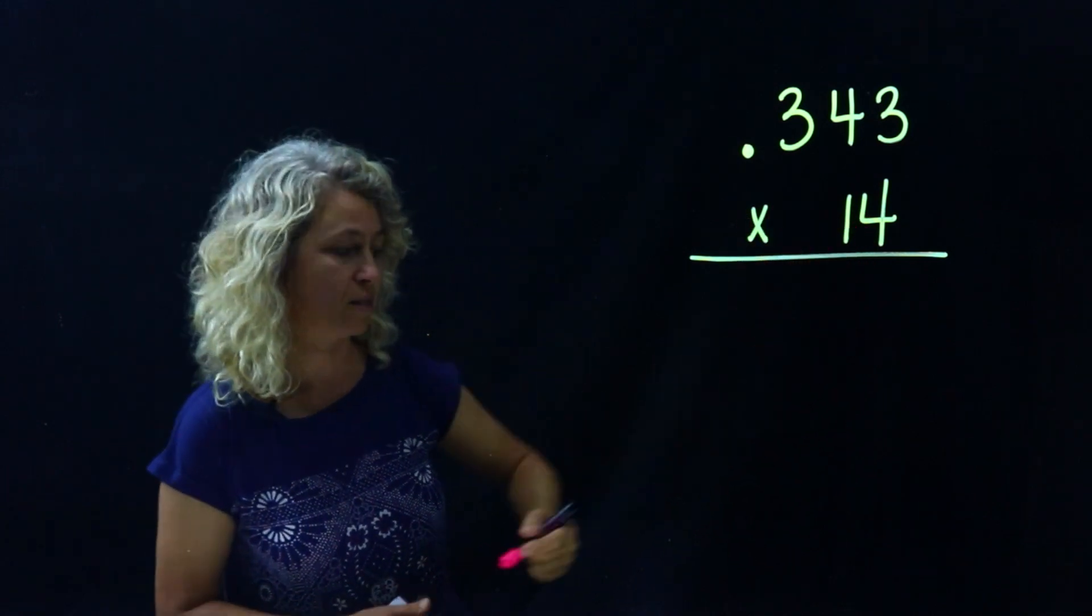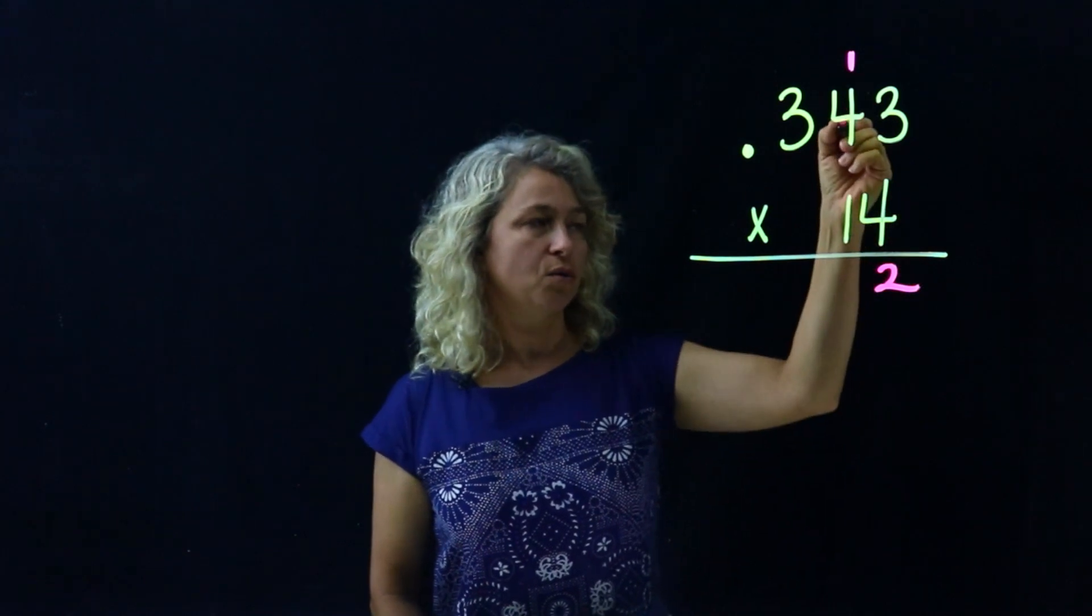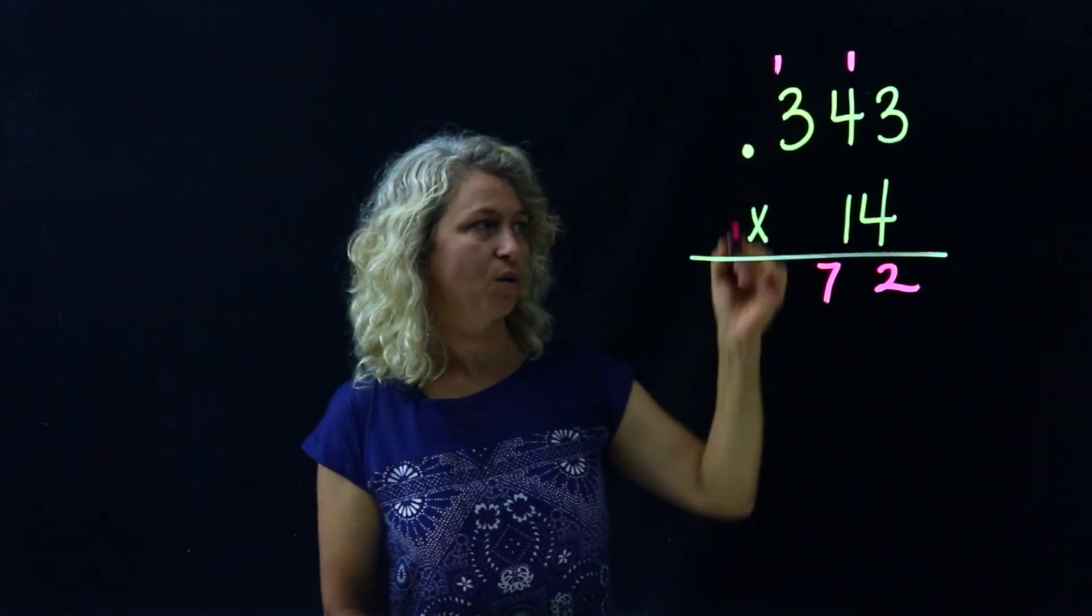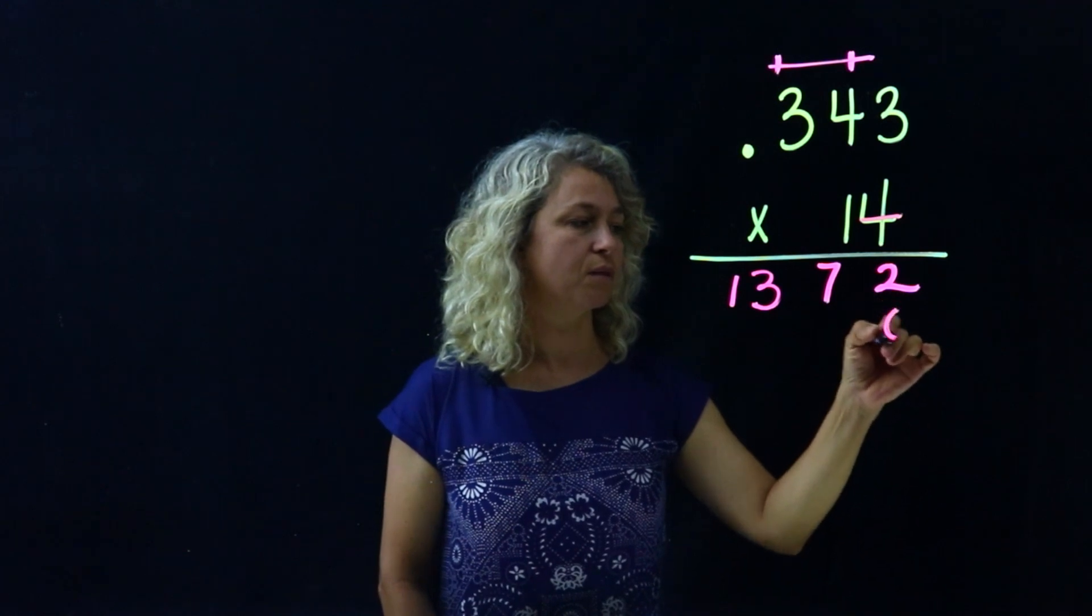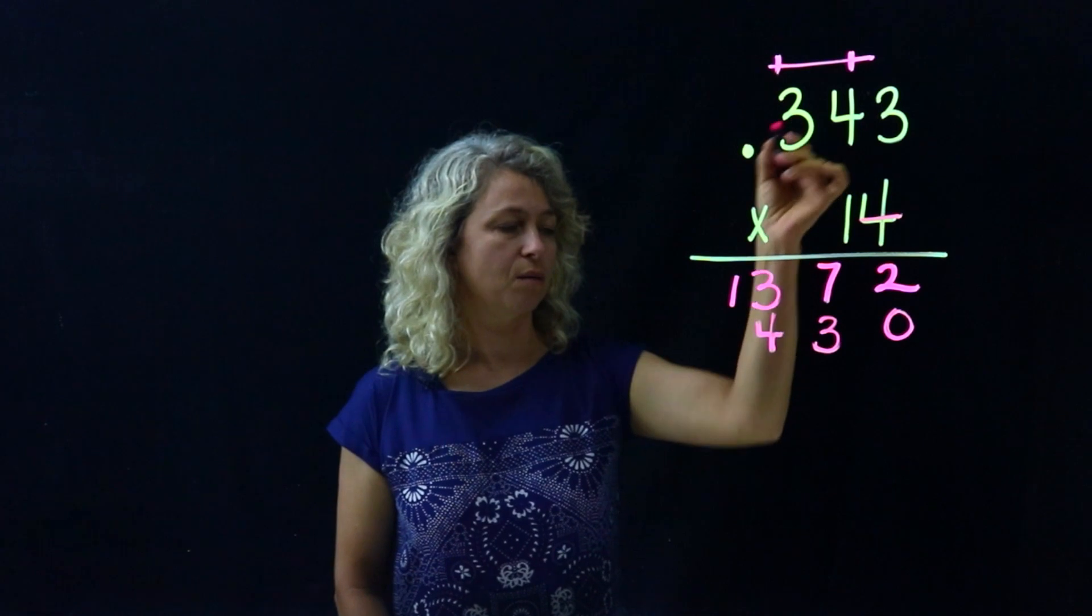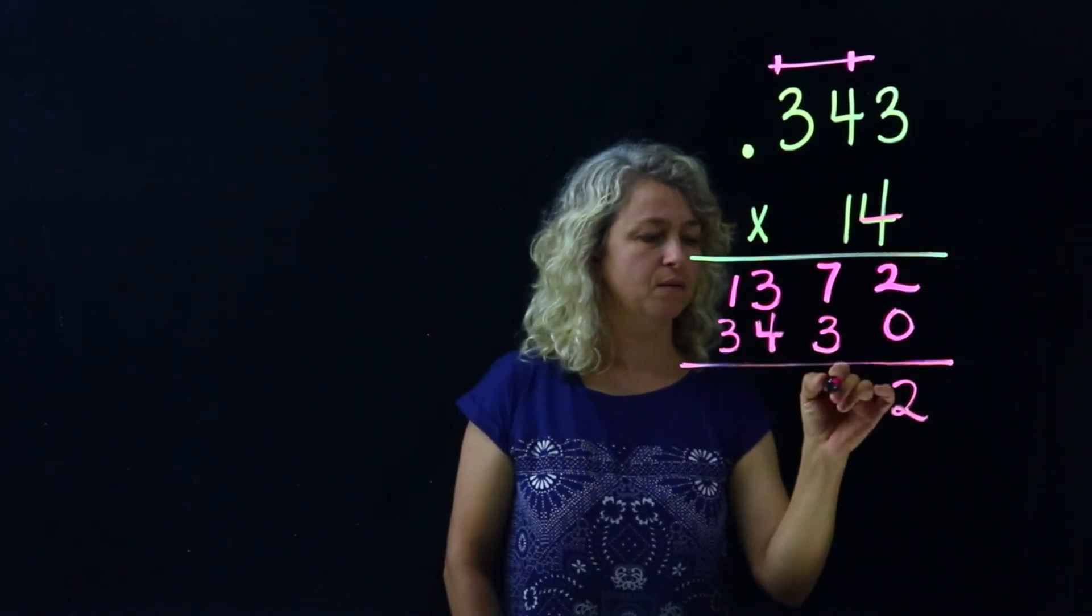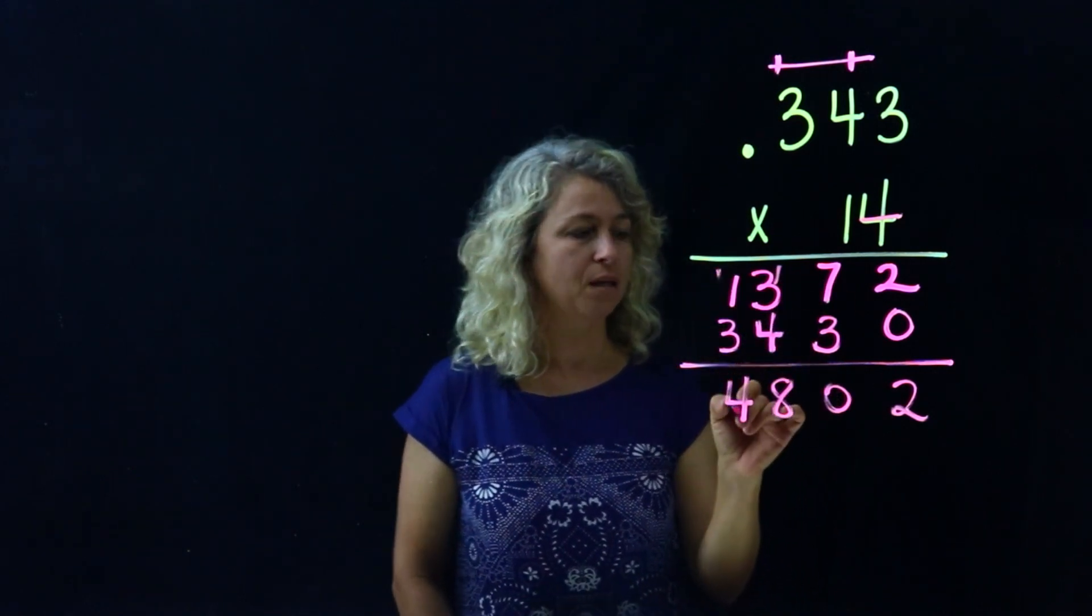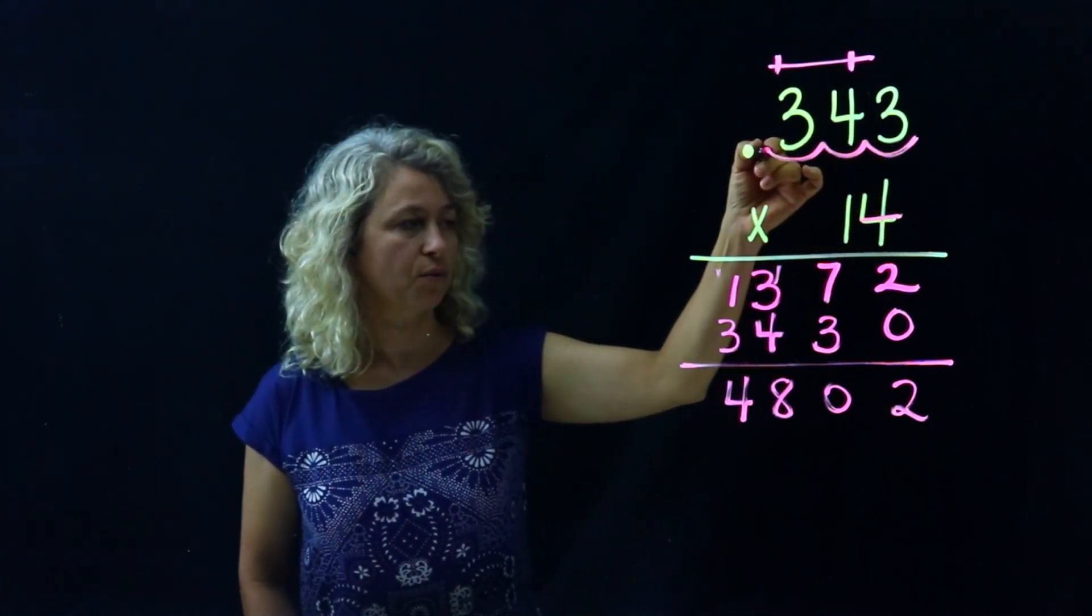All right, so let's multiply: four times three, that's twelve; four times four, sixteen plus one is seventeen; four times three is twelve plus one is thirteen. One times three, one times four, and one times three. Now add, and here you are.